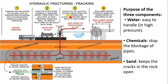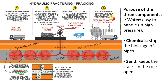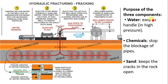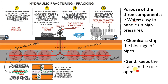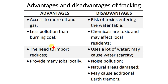Shale gas collects at the wellhead pipe for processing and cleaning before use by industries and homes. Some of the water content is reclaimed, stored in tanks, and transported to treatment plants for purification and reuse. The purpose of the three components: water is easy to handle at high pressure; chemicals stop pipe blockage from sand; and sand keeps the cracks in the rock open for gas and oil to flow to the surface.